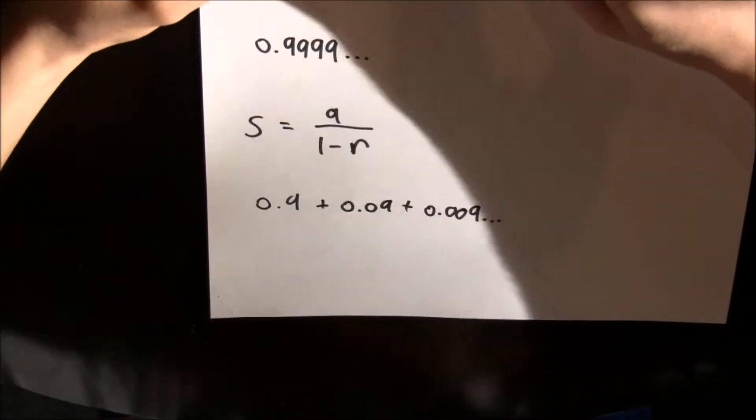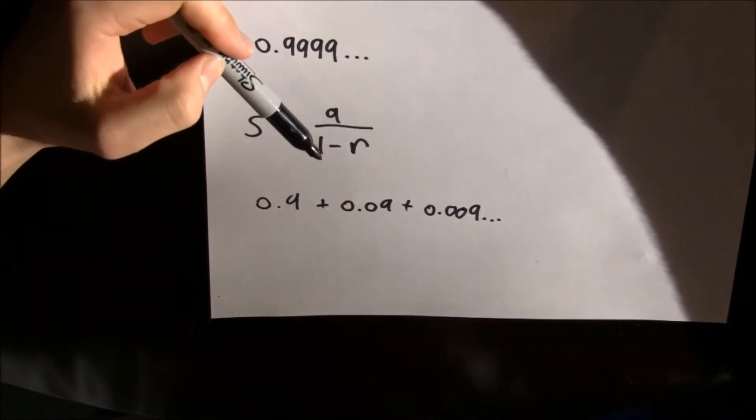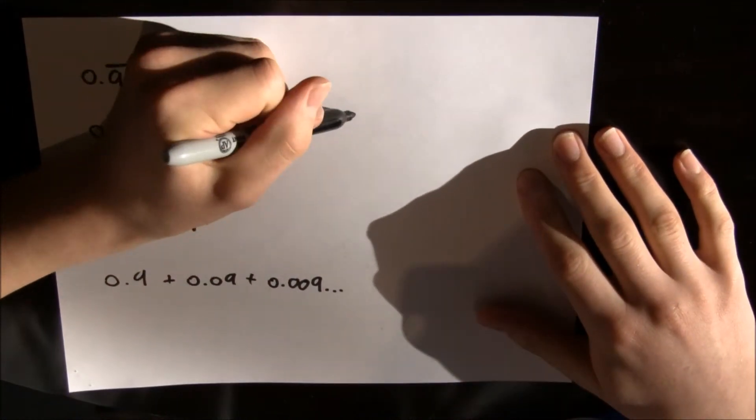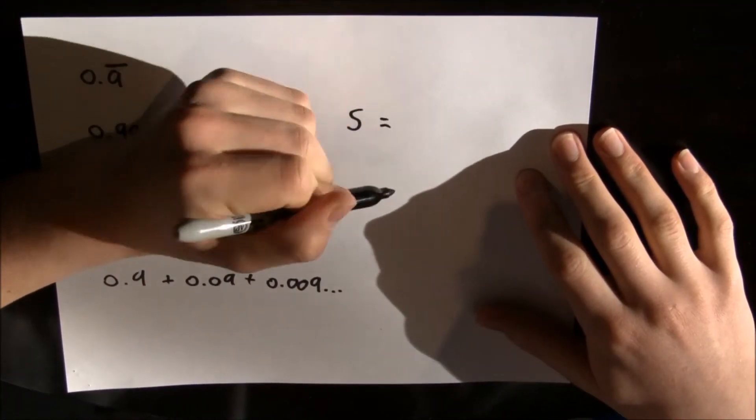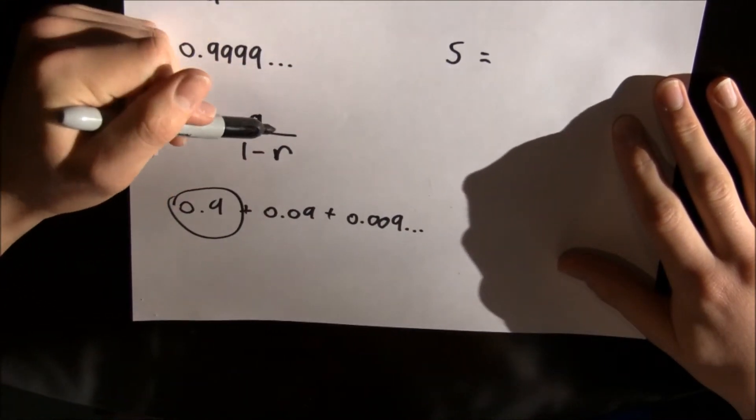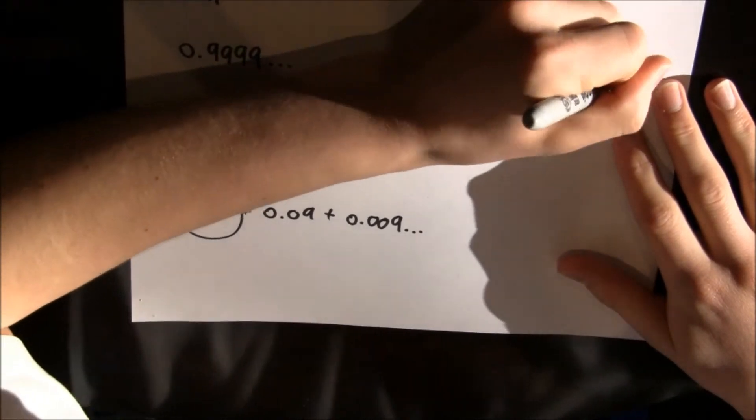So let's substitute our numbers into our equation here. We've got the sum equal to 0.9, because that's our first term, so 9 tenths over...